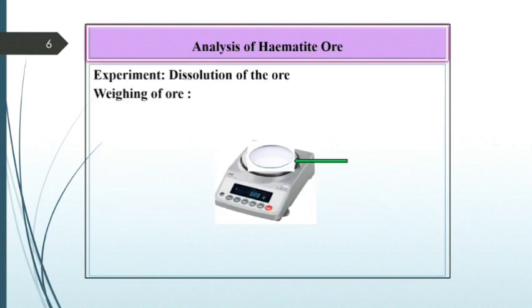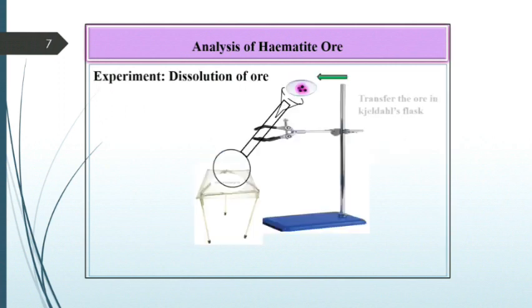For the analysis of hematite ore, we have to dissolve the ore. Weigh about 0.3 gram of ore on a watch glass and record this reading as W gram. Now transfer this ore in a Kjeldahl flask and add 7 to 8 ml concentrated HCl to it.